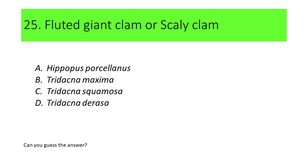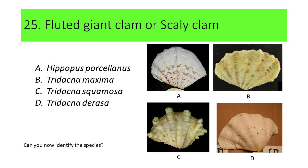If not, here are the pictures. A. Hippopus porcelanus, B. Tridacna maxima, C. Tridacna squamosa, and D. Tridacna derasa. Can you now identify the species? If not, here's another hint. The shell of this species is equipped with equally spaced large scutes or scales. If your answer is C or Tridacna squamosa, you're correct. Tridacna squamosa is commonly called fluted giant clam or scaly clam.